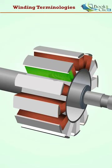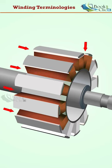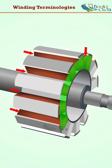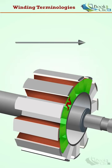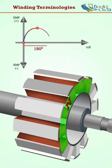Part of the coil in each slot is called the coil side. The number of slots will accommodate a series of coils to produce one magnetic pole. One pole is responsible for 180-degree electrical of induced EMF.